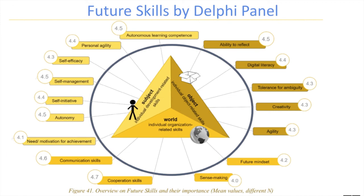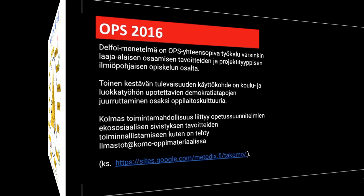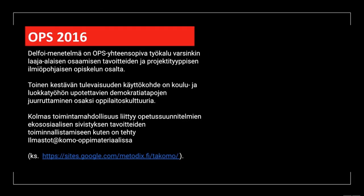Yhteisötaitojen vastapainona yhtä korkealle arvostetaan yksilön kykyä toimia autonomisesti ja itseohjautuvasti. Vihreillä ympyröillä on rengastettu kuusi tulevaisuustaitoa, joiden kehittämisessä Delphoi-pedagogiikka on vahvimmillaan. Punaisella pisteellä on poimittu esiin kuusi tärkeimmäksi arvioitua taitoa. Puolet merkityistä osaamisista on yhteisiä. Jatkuvassa ryhmäoppimisessa vahvistuvat etenkin itseohjautuvaan toimintaan, sujuvaan työnjakoon ja asioiden reflektoimiseen liittyvät kyvyt.